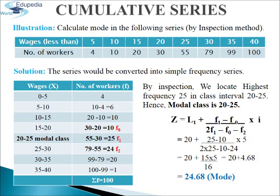We will start with 4. Since cumulative series are provided, we will deduct the frequency from the preceding one to get the actual frequency of that particular class interval. So 0 to 5, we write 4. For 5 to 10, we deduct 4 from 10 to get 6. For 10 to 15, we deduct 10 from 20 to get 10. This is how we calculate the actual frequency for each class interval. By inspection method, we can locate that 25 is the highest frequency, in the class interval of 20 to 25. So the modal class is 20 to 25 and the highest frequency is 25.